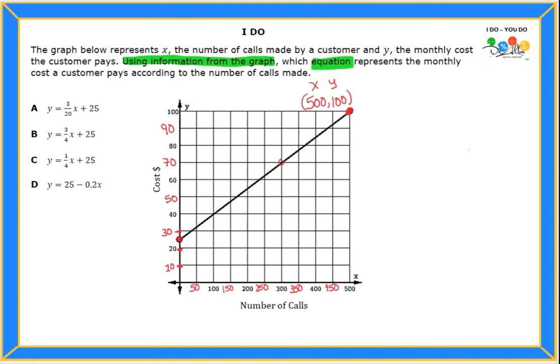For example, how about this point here? That looks like a pretty good point. That point would be 300 and 70. Can you find me another point that is in a very good location? How about this one here? That's also a very good point. It's the intersection of 100 for x and 40 for y.